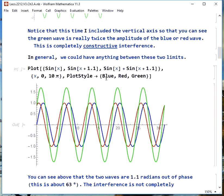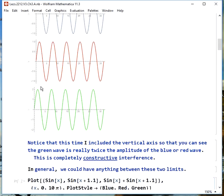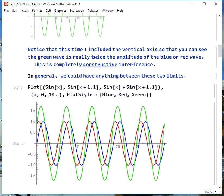In general, we can have anything between the two limits of completely constructive and completely destructive. Here we have two sine waves, same amplitude, same frequency, but out of phase by about a little bit more than a quarter of a wavelength. And what we notice here is we get a peak that is higher than either of the individual waves, but it's not as high as it was for completely constructive interference.